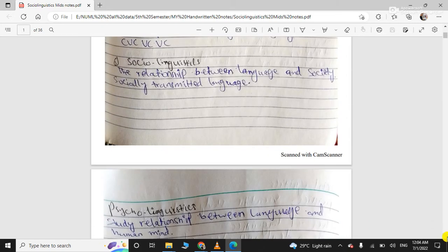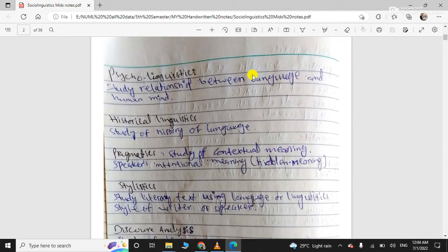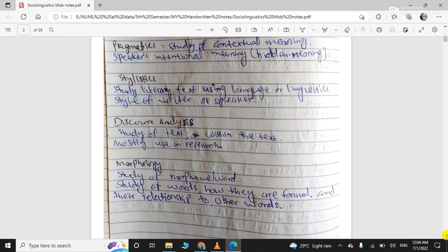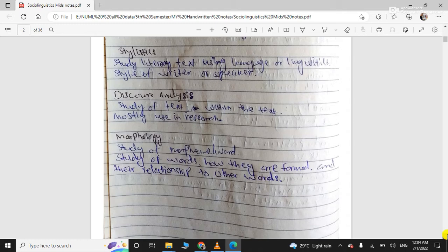Sociolinguistics - we will discuss this in detail. Then comes psycholinguistics, the study of relationship between language and human mind. Historical linguistics - history of language. Pragmatics - study of contextual meaning or speaker intended meaning. Stylistics - study of literary text using linguistics. Discourse analysis - study of text within text. And morphology - study of morphemes and how words are formed.